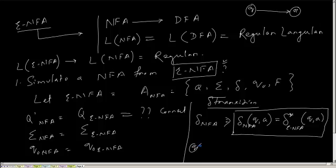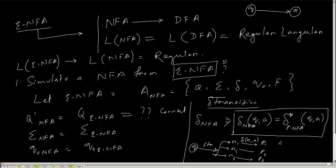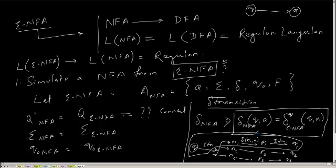From Q, you apply empty transitions and reach states R1, R2, R3. For each of these states, you apply the transition function of the epsilon-NFA on input A: R1 reaches P1, R2 reaches P2, R3 reaches P3. From P1 you can do an empty transition again and reach states Q1, Q2, Q3. So the entire thing is the extended transition function from state Q on input A.